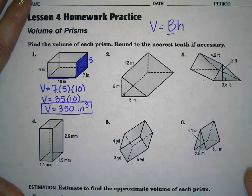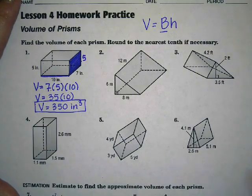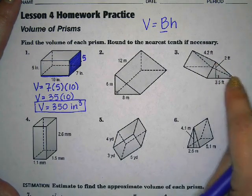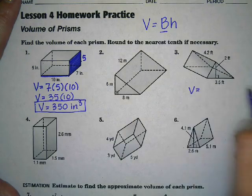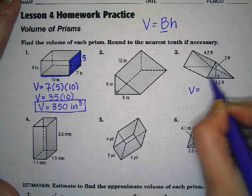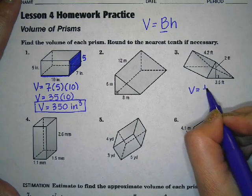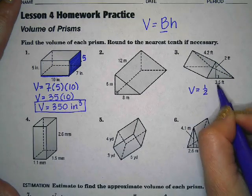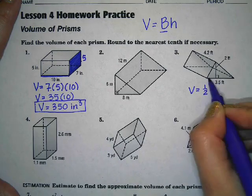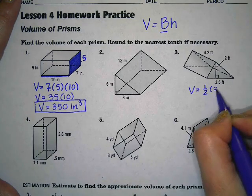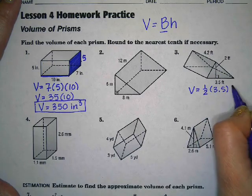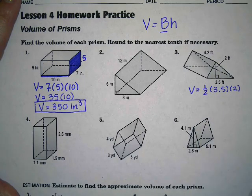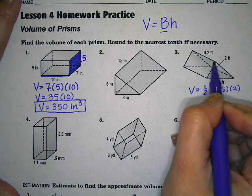On number three we're going to do the same thing. This time our base is a triangle. So our volume now is going to be the area of our triangle, which is one half times the length of our triangle, which is 3.5, times the height of our triangle, which is 2.